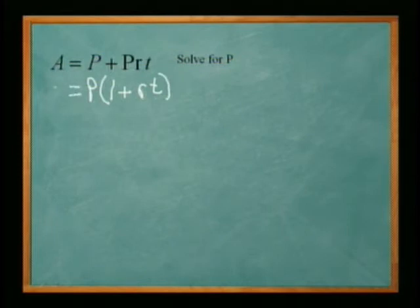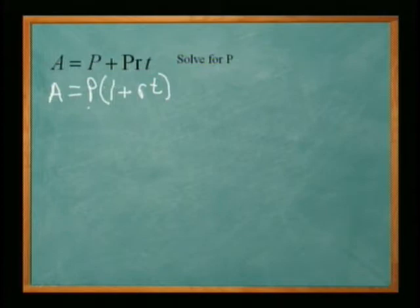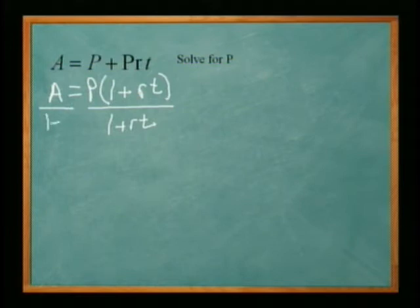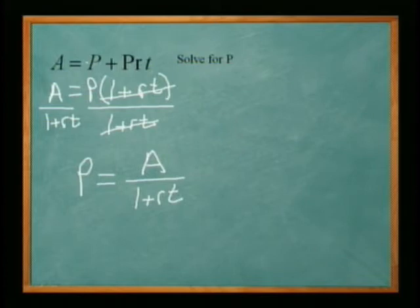That's just general factoring. Each term had a factor of p so I factored it out. If you multiply it back, p times 1 gives you p, and p times rt gives you prt. Now we only have a single p and it's multiplied by the quantity 1 plus rt. So all we need to do is divide by 1 plus rt on both sides. That cancels out leaving p by itself, equal to a over 1 plus rt. The trick was to factor it out first — without factoring it would be impossible to solve.